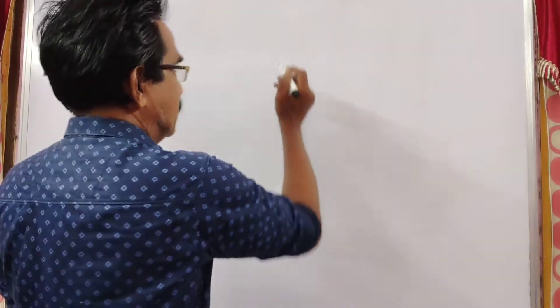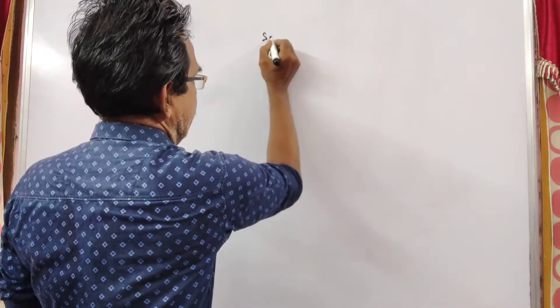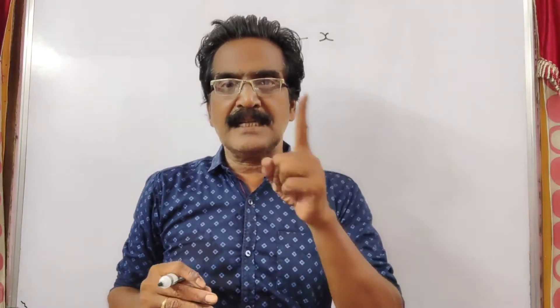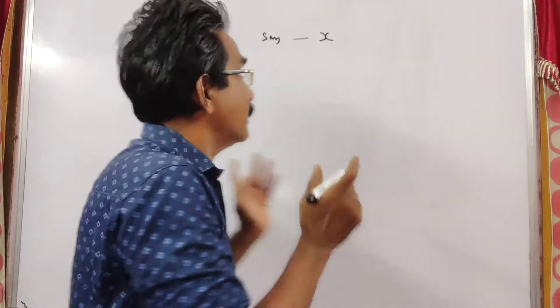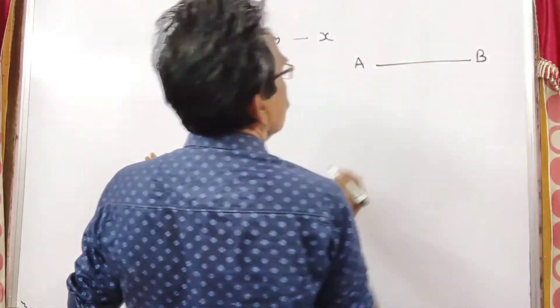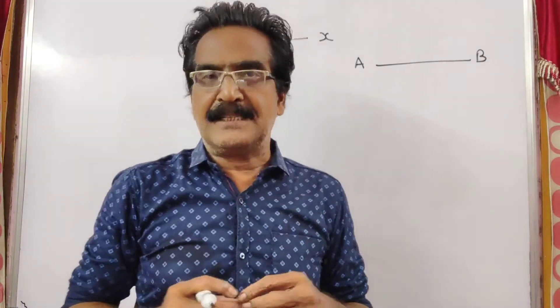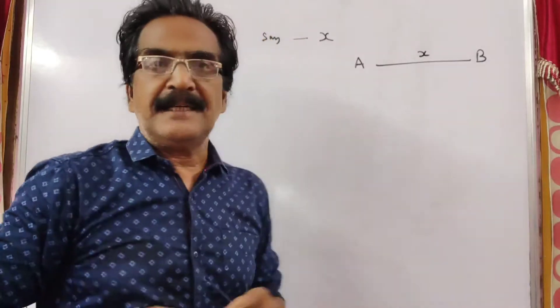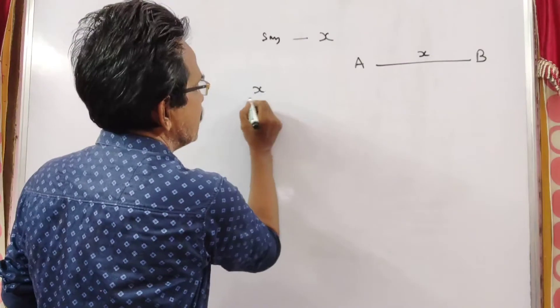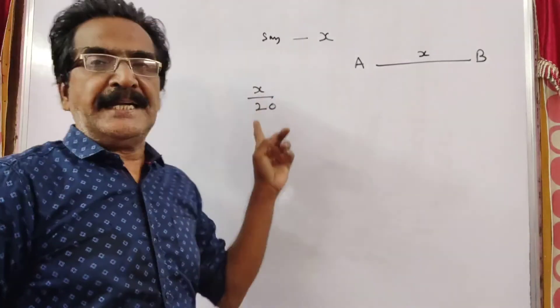This is a simple one. Say the distance is X. The speed of the first car is 20 kmph. How much time does car A take to go from A to B? Distance is X, velocity is 20 kmph, so the first car takes X by 20 hours.